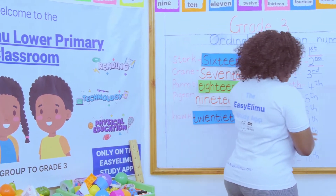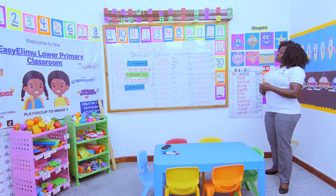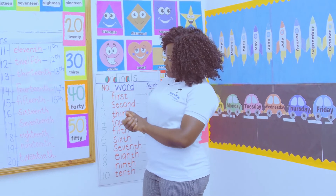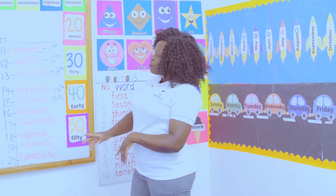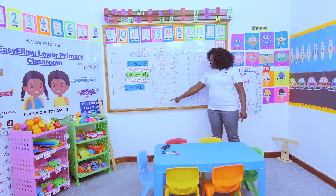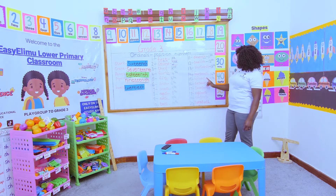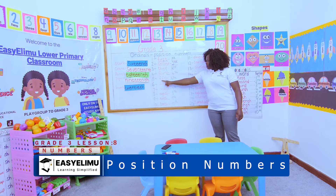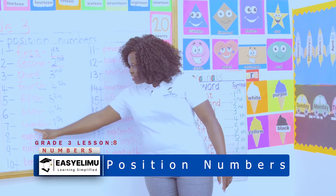We are still here on ordinals. Who can remind us the rules we said yesterday on ordinals? Ordinals are used to rank things. They state the position of things. Very good. What else? Apart from first, second, and third, all the other numbers — four, five, six, seven, eight, nine, ten, eleven, twelve, thirteen, fourteen — you use the original number and you add a TH. Original number plus TH.